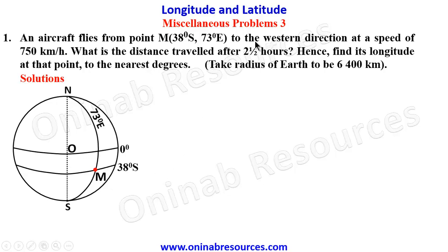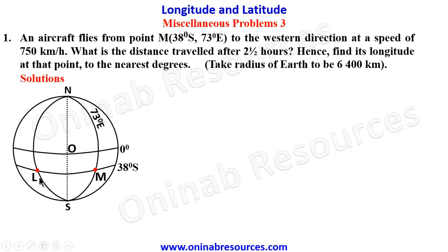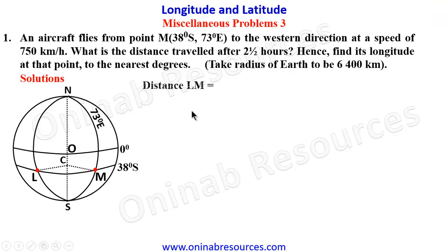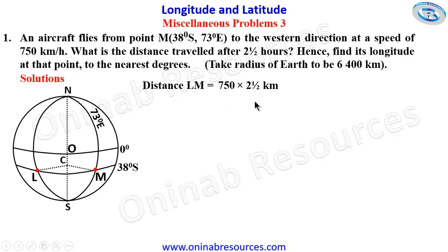The aircraft travels in the western direction, so it moves along latitude 38 degrees South to a destination which we call point L. This is along a small circle. The distance traveled after two and a half hours: distance LM equals speed multiplied by time, which is 750 times 2.5, giving 1875 kilometers.